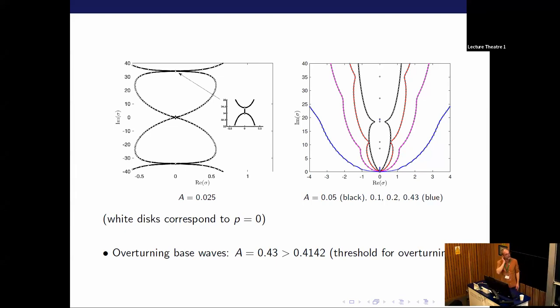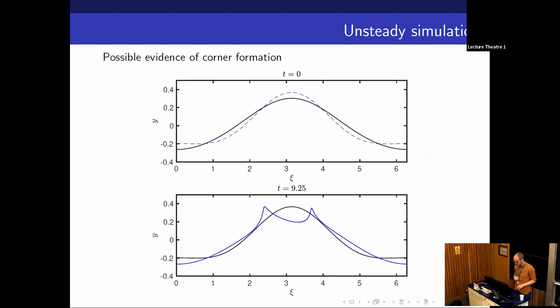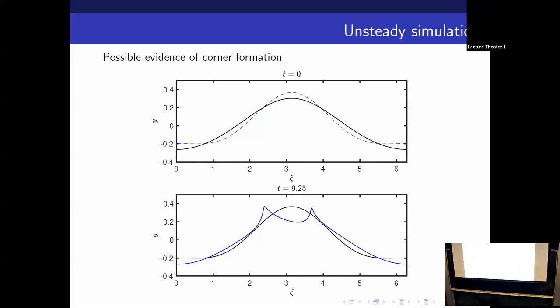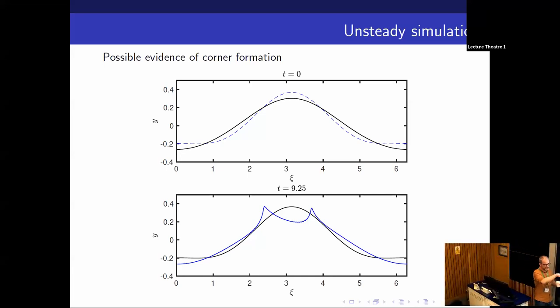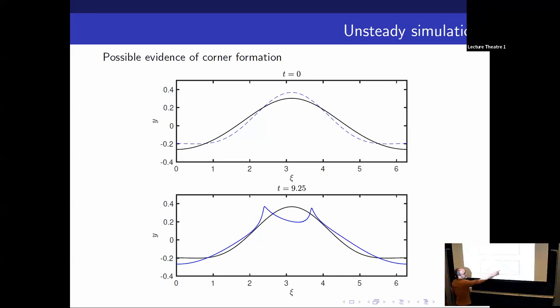On the basis of that, we thought it'd be interesting to do an unsteady simulation. To take the surface formulation of the problem, take a traveling wave solution, perturb about that, and then set off an unsteady simulation. Here's an example of that. The top slide, the solid curve is one of the traveling waves. The blue dotted line is the initial conditions. That's a small perturbation of that at t equals 0. And I've exaggerated so that we can see it. The perturbation is a lot smaller in amplitude than we're looking at. And then a short while later in dimensionless time units, so 9.25, the black line then is the initial condition. The blue line is the free surface and it looks very much as though it's trying to form two corners.